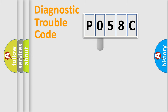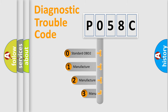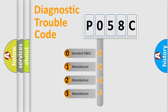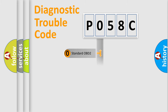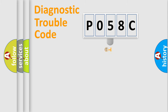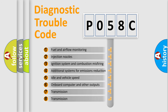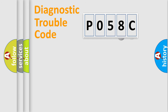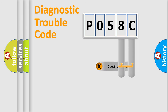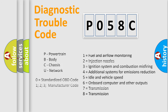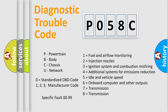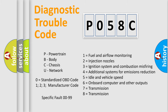This distribution is defined in the first character of the code. If the second character is expressed as zero, it is a standardized error. In the case of numbers 1, 2, or 3, it is a manufacturer-specific error expression. The third character specifies a subset of errors. This distribution is valid only for the standardized DTC code. Only the last two characters define the specific fault of the group.